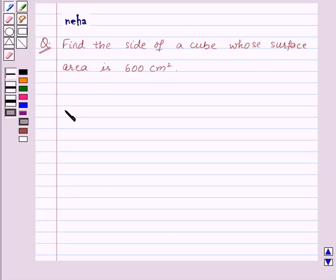Now before proceeding for the solution, let's recall the formula of surface area of a cube. That is equal to 6 into L square, where L is the length of the side of cube.